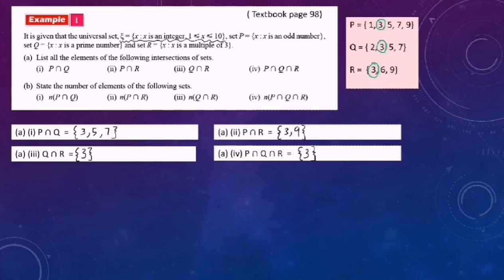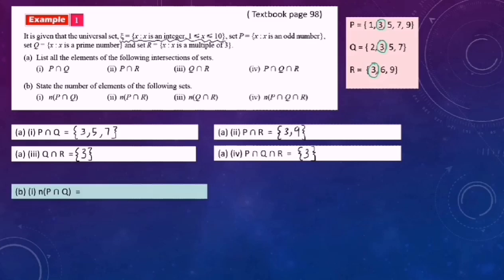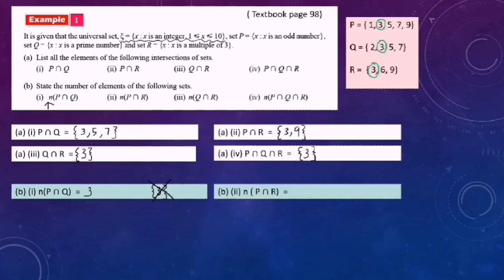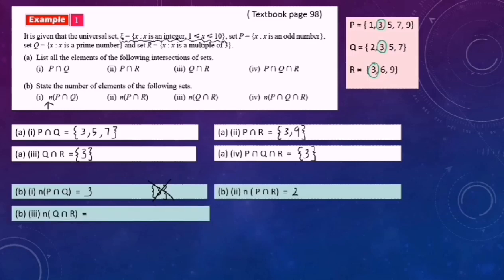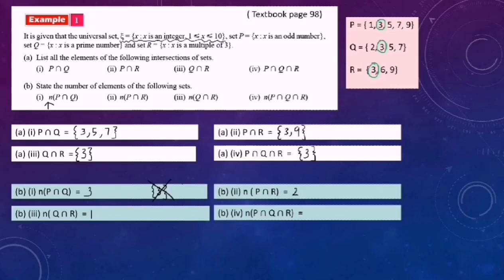Next, find the number of elements of the following sets. The number of elements in P intersect Q: there are 3 elements, so we write 3. Note: some students write {3} but that is wrong because {3} refers to the element 3, not the count. The number of elements in P intersect R is 2. The number of elements in Q intersect R is 1. The number of elements in P intersect Q intersect R is 1.